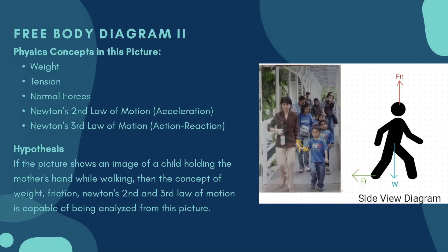In the first view, we are able to see the child and the mother holding hands, which shows tension. When a person is walking, there will be friction as they are pushing their leg to the ground. The weight and normal force (Fn) will always be the same — the weight going down and the Fn going up.